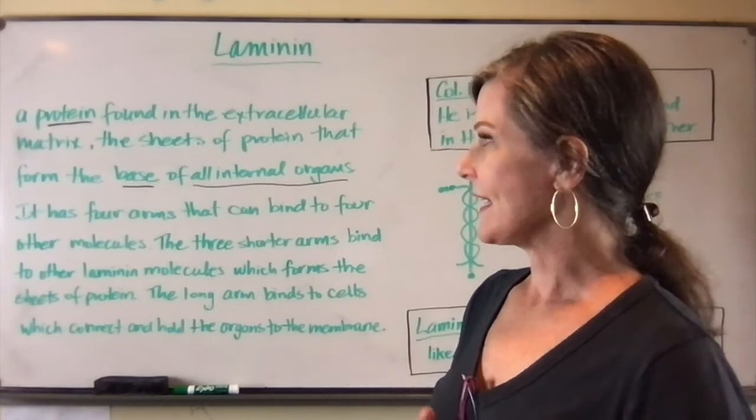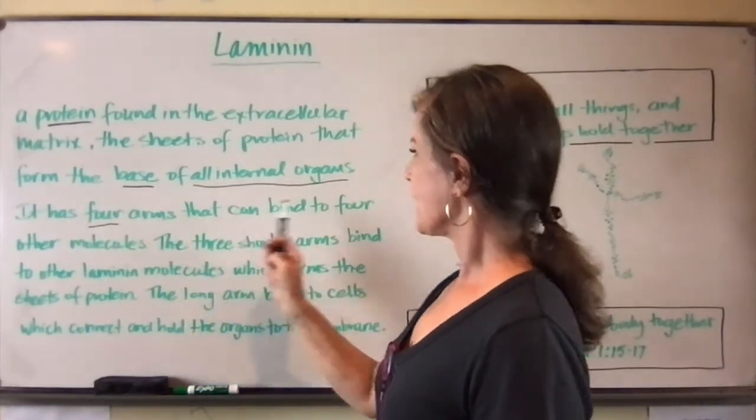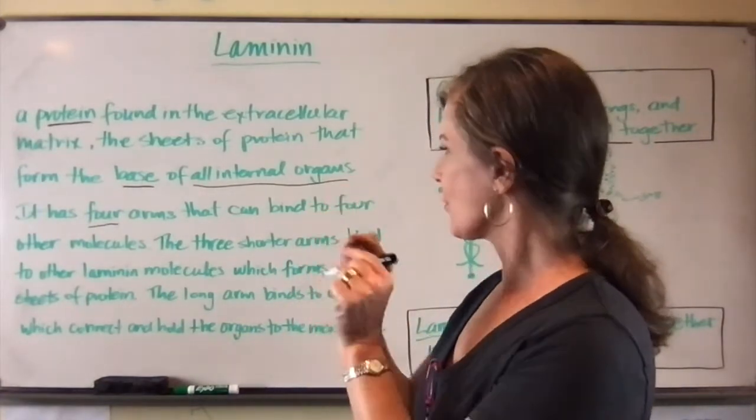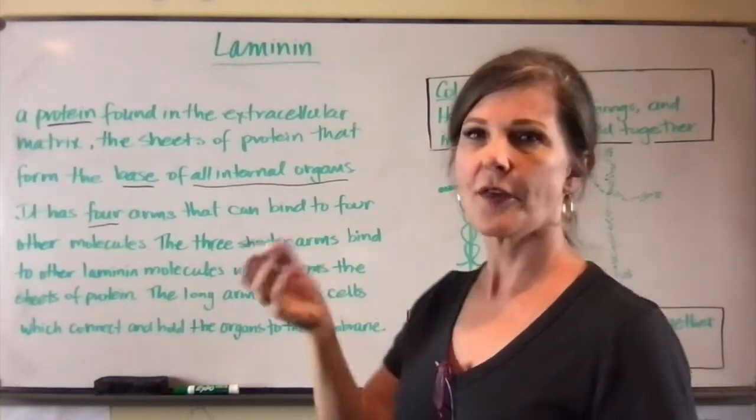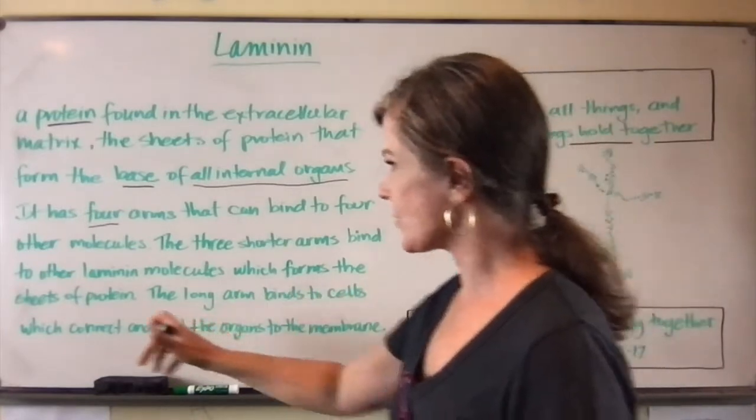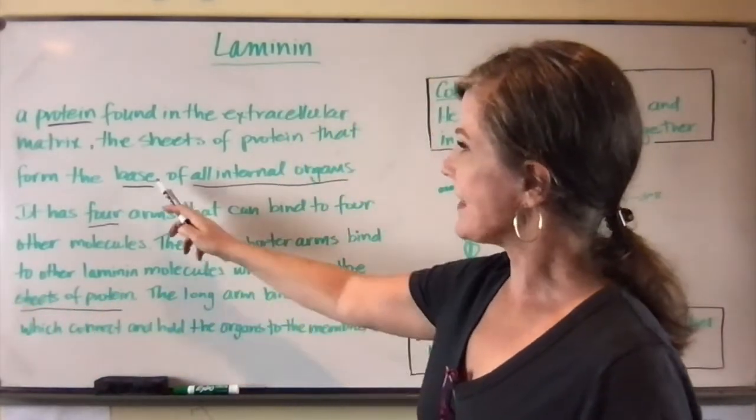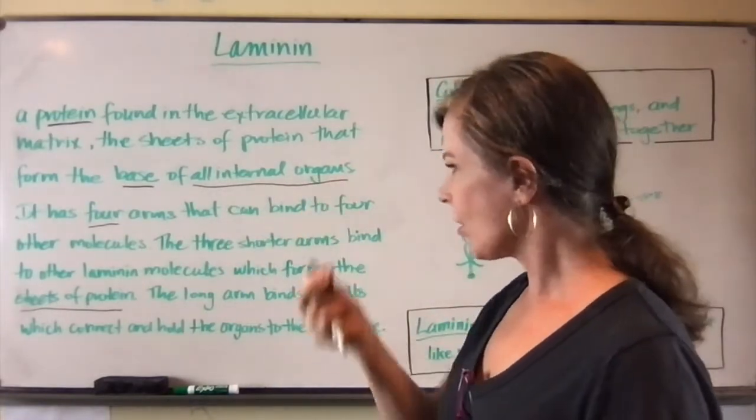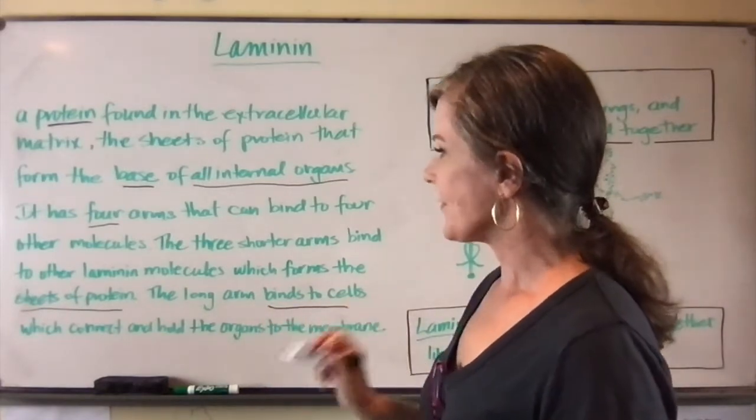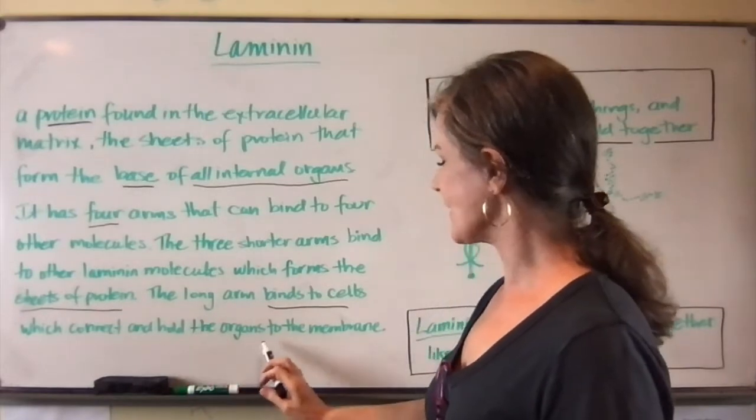Now the laminin has four arms, four arms that can bind to four other molecules. The three shorter arms on the top bind to other laminin molecules and that forms the sheets of protein. The sheets of protein are the base of all the internal organs.